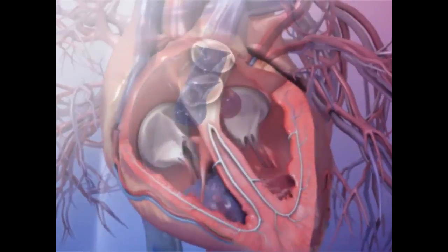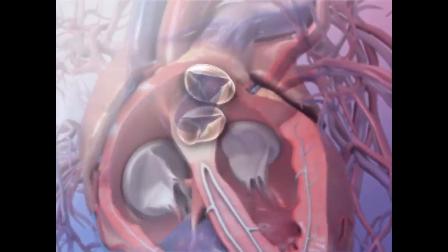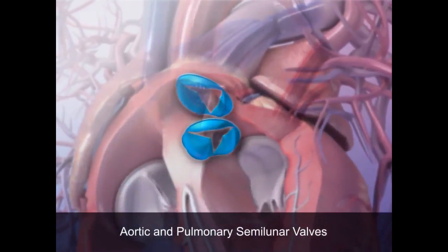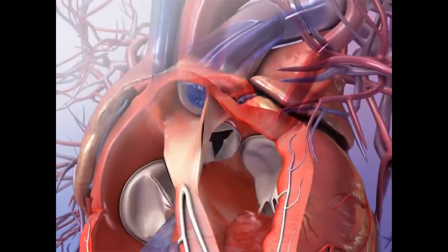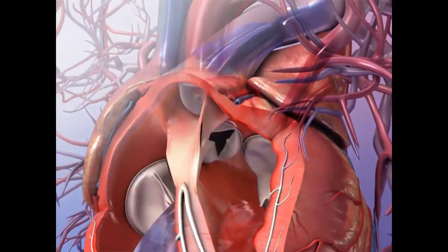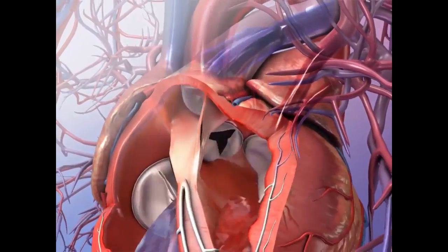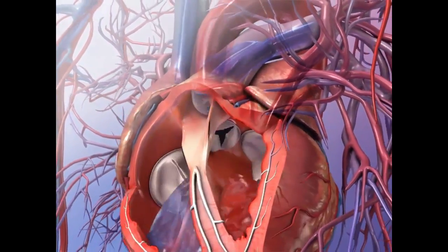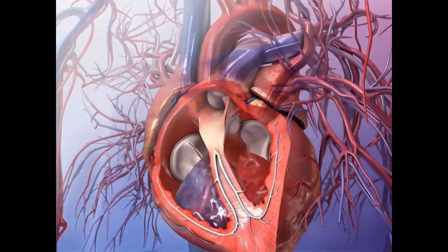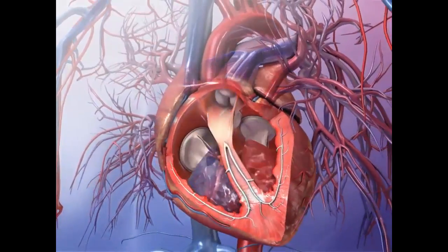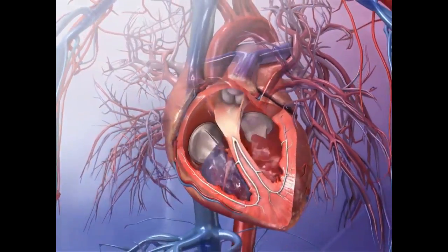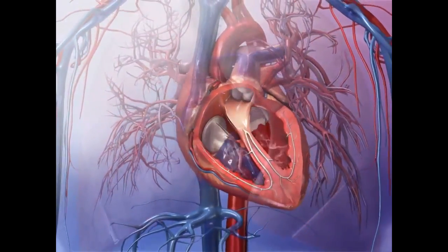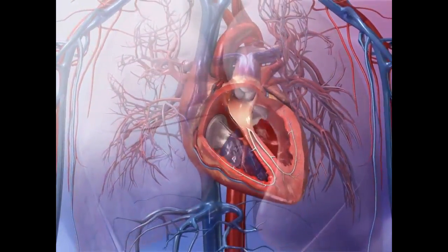The other two valves are the aortic and pulmonary semilunar valves. These valves prevent the backflow of blood into the segment it just exited. Each of the four valves is composed of flaps called leaflets or cusps, which prevent backflow of blood in the wrong direction.